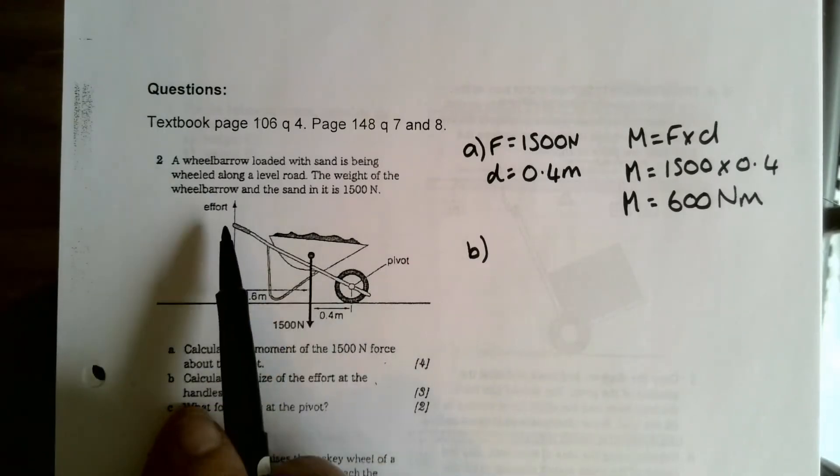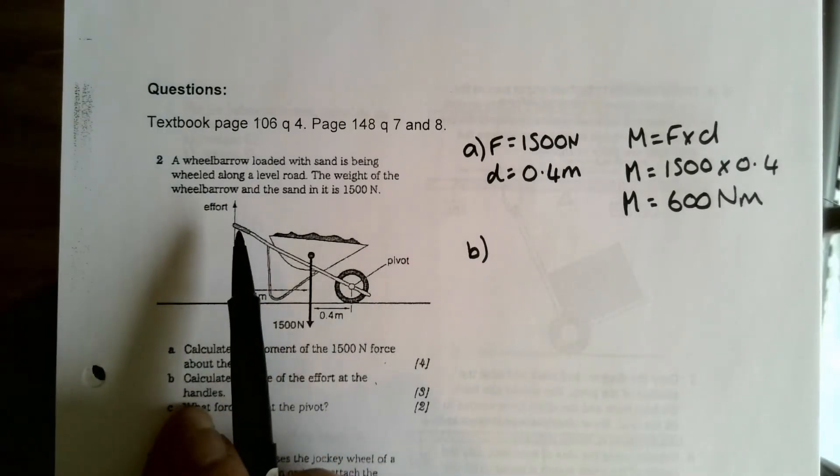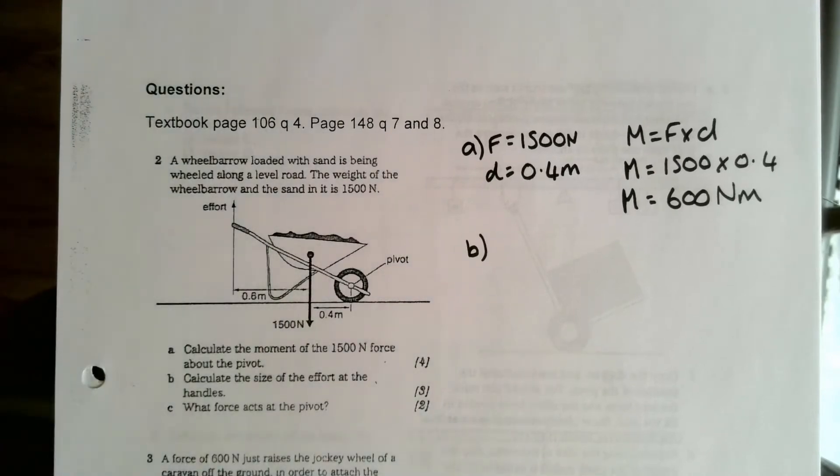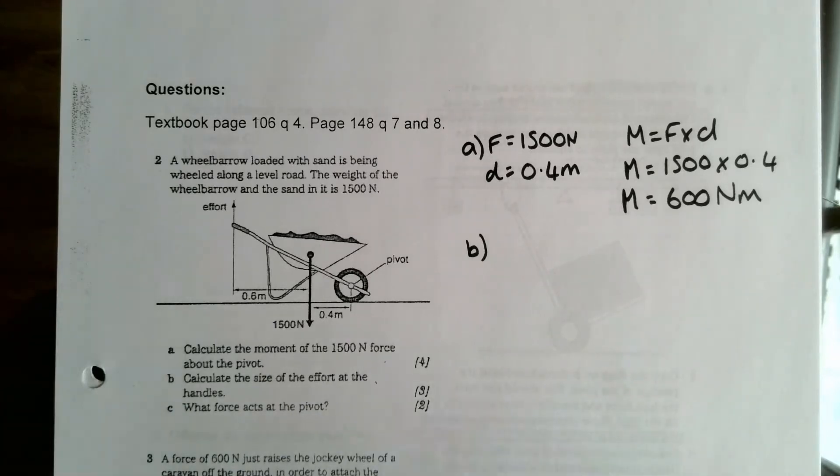So if this is our pivot here and we've got the weight acting down here, and the effort has to act up this way, then the way that we would calculate this is to say that this is balanced because really we're trying to calculate the size of the effort that is just big enough to start lifting this. And at that point it's not going to be balanced anymore, so we calculate what the size of the effort force is when it's still balanced but just still balanced and just before it's about to go.